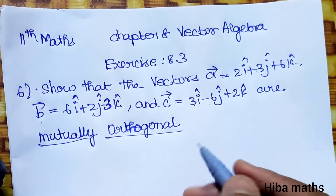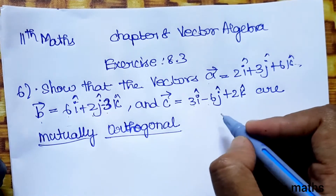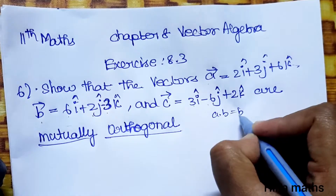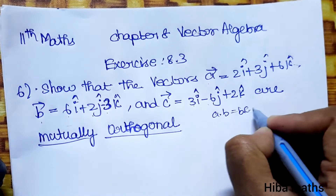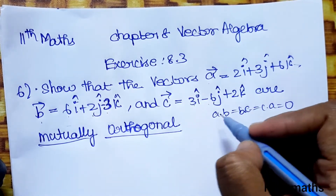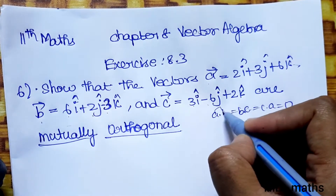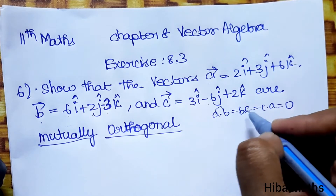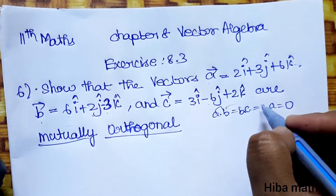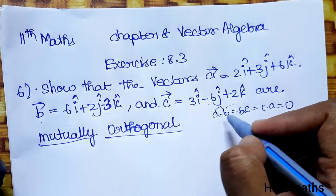Mutually orthogonal means A·B, B·C, and C·A are all equal to 0. That means A is perpendicular to B, B is perpendicular to C, and C is perpendicular to A.